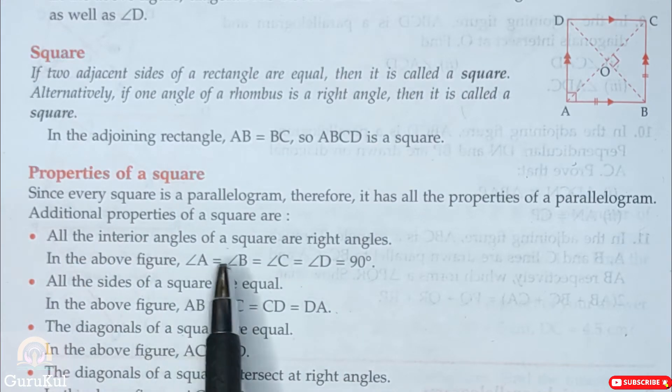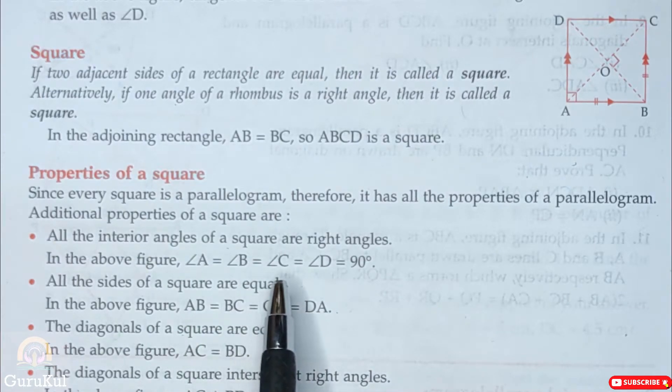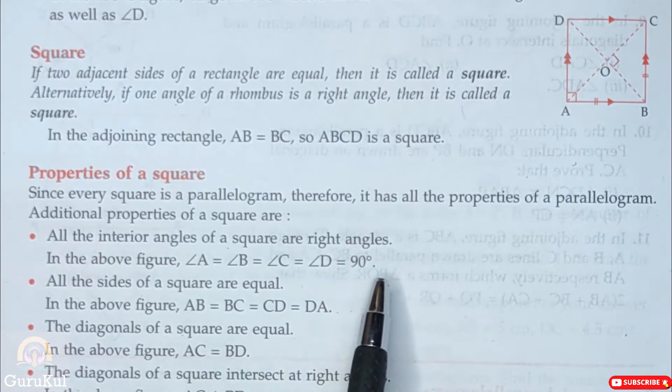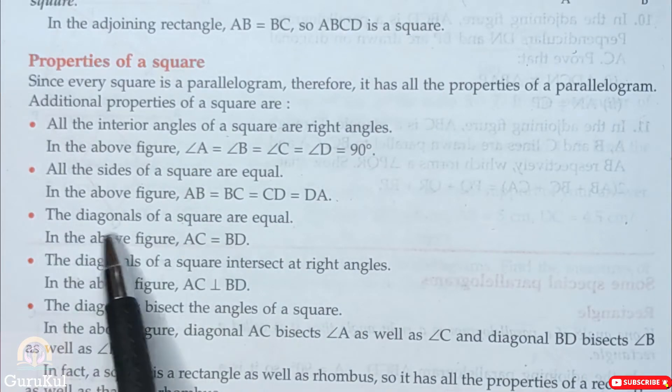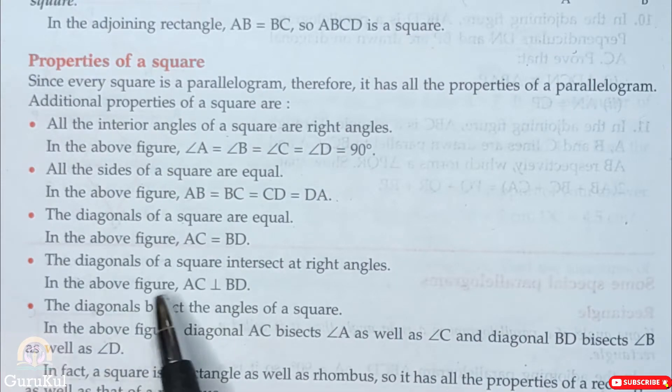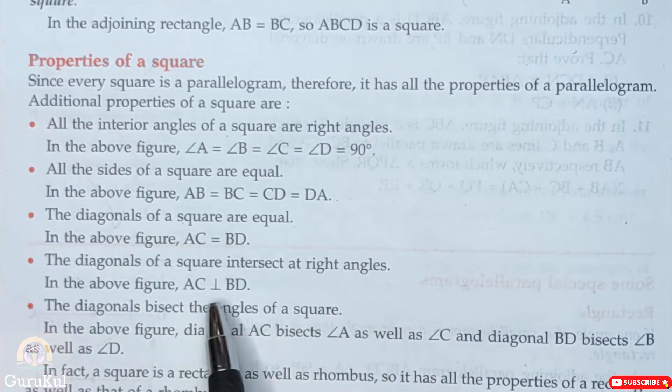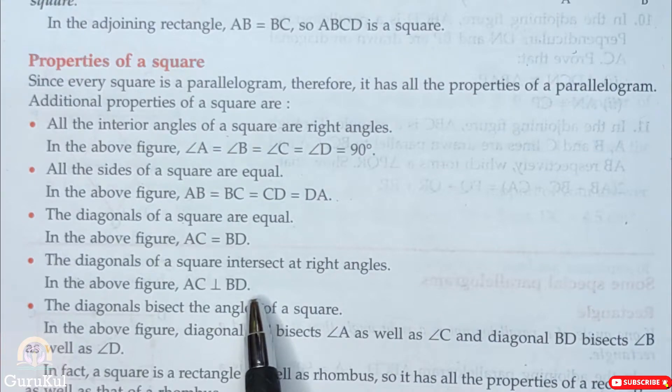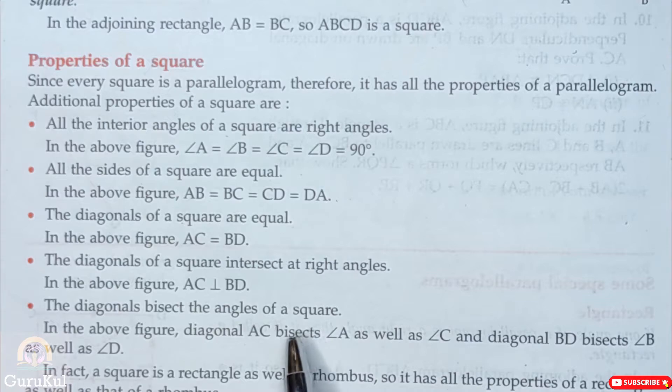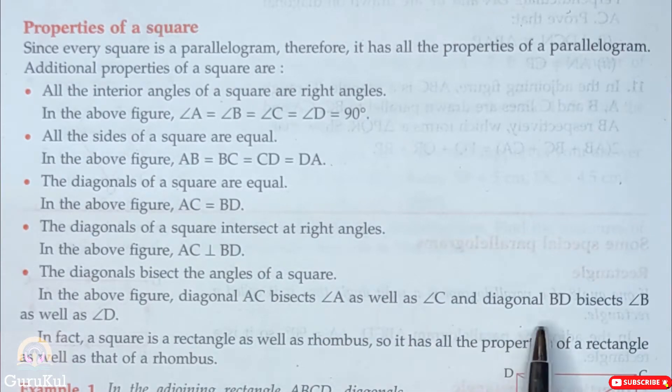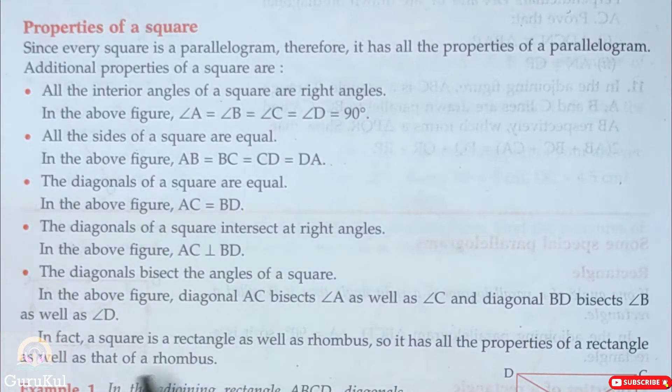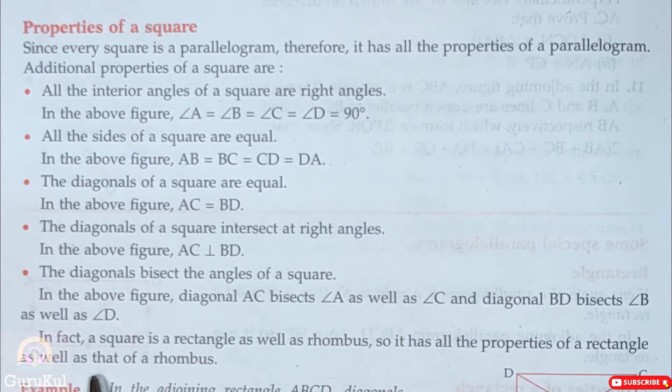So the first one, all the interior angles of a square are right angles. That means angle A is equal to angle B is equal to angle C is equal to angle D which is 90 degrees. Next, all the sides of a square are equal. AB is equal to BC is equal to CD is equal to DA. Next, the diagonals of a square are equal. AC is equal to BD. Next is that the diagonals of a square intersect at right angles. So AC is perpendicular to BD. That means it is 90 degrees. The diagonals bisect the angles of the square, just like in rhombus. So the diagonal AC bisects angle A as well as angle C and diagonal BD bisects angle B as well as angle D. So if you can see, a square is a rectangle as well as a rhombus. So it has all the properties of a rectangle as well as that of a rhombus.